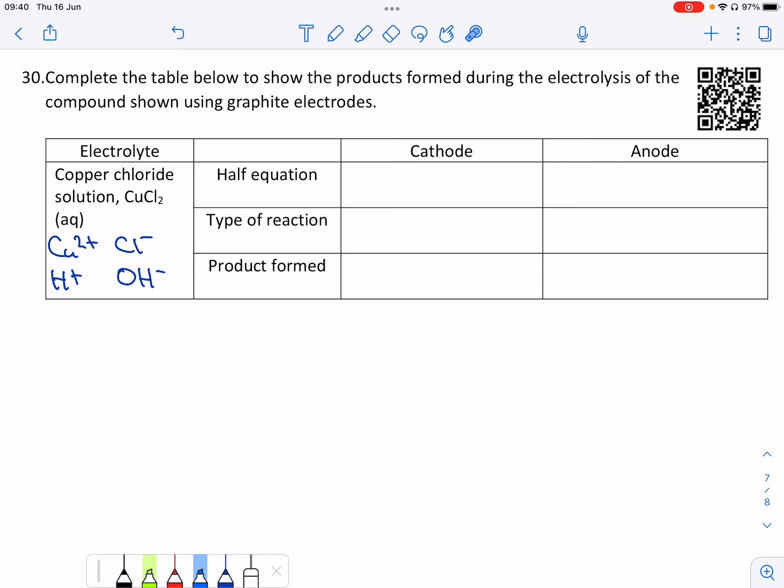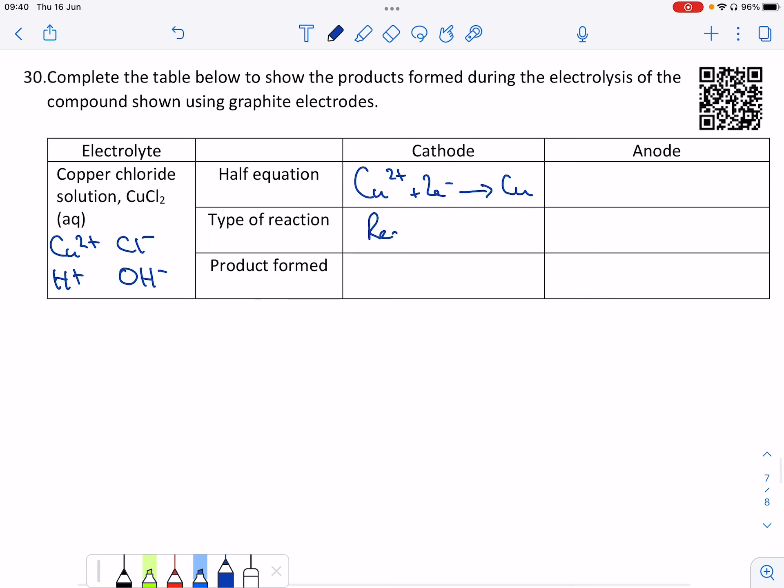At the cathode, we need to look at these two cations. The rule at the cathode is that the least reactive will undergo reduction first, which in this case is the copper. So copper ions arrive, pick up two electrons, and form copper atoms. That is gaining electrons, so it is reduction. The product, as you can see from the equation, is copper.